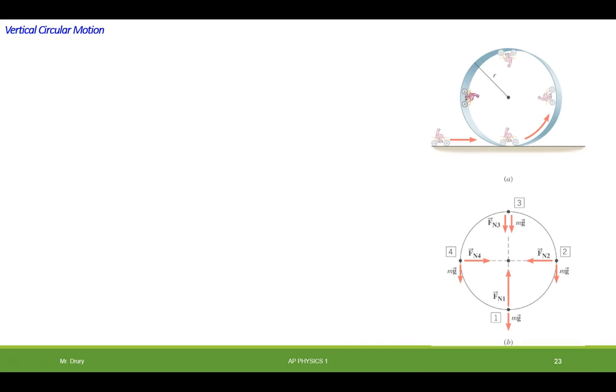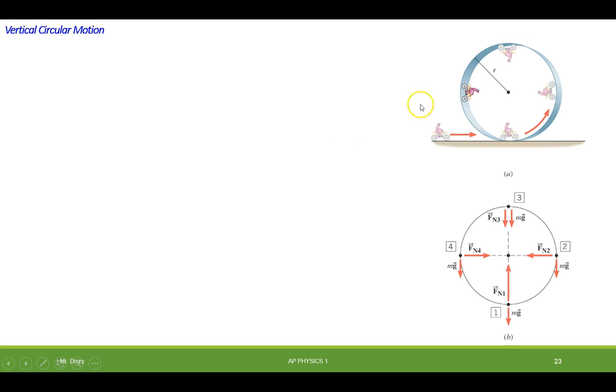Alright, let's look at vertical circular motion. We've got a motorcyclist coming up and into a loop. It goes all the way around the loop. And what we've done is we've drawn a free body diagram at four locations: one on the bottom, one on the top, and the two sides as shown right here. Now let's take a moment and look at this.